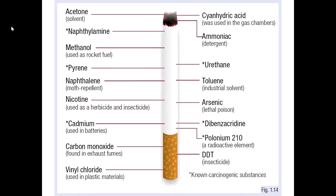This image from the CDC, the Centers for Disease Control, shows some of the chemicals found in a cigarette. It includes carcinogenic substances such as polonium, dibenzacridine, urethane, pyrene, and cadmium.